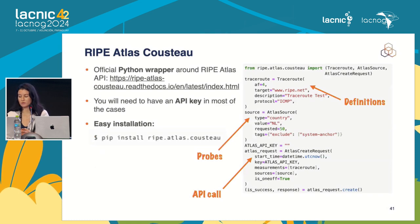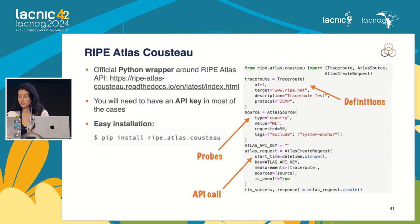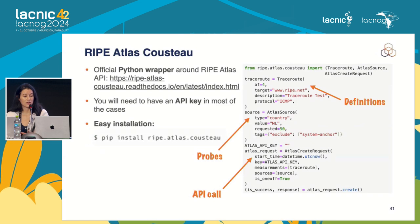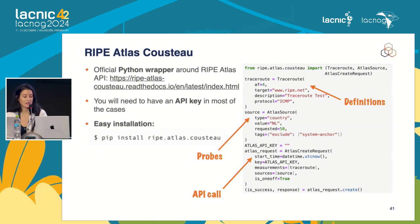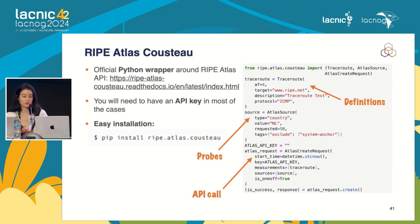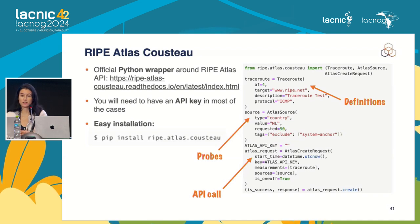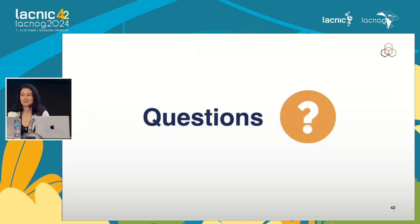Another format to consult the API is a Python library called 'ripe-atlas-cousteau', installable via pip. Here is an example creating a traceroute measurement to RIPE, selecting 50 probes, and calling with the API key. You define whether the measurement is periodic or one-time, and the response gives you the measurement ID if successful.